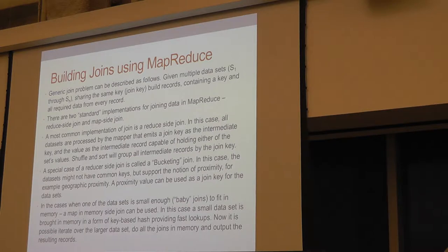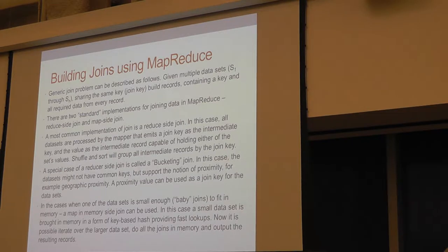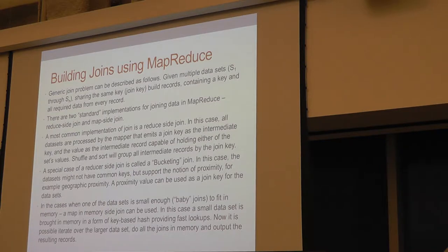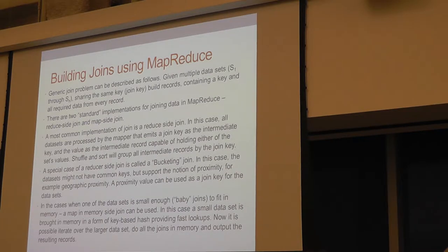Another very common problem is building joins on data sets. When trying to solve this in MapReduce there are several approaches. The generic approach described everywhere is reducer-based join. The API is very simple: you take as many data files as you want, read them one by one, and output every record based on the key you want to join on. Then shuffle and sort guarantees that all values from a given key come together to the reducer. The reducer just combines the results — very simple and straightforward, but also very slow.